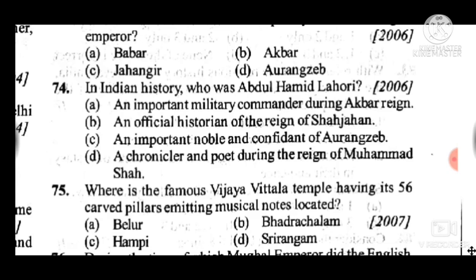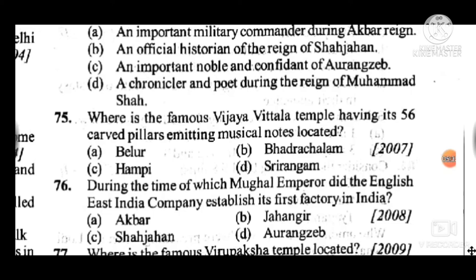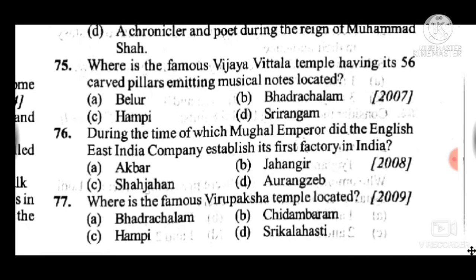Question 76: During the time of which Mughal Emperor did the English East India Company establish its first factory in India? Answer is B, Jahangir. Question 77: Where is the famous Hazara Rama Temple located? Answer is C, Hampi.